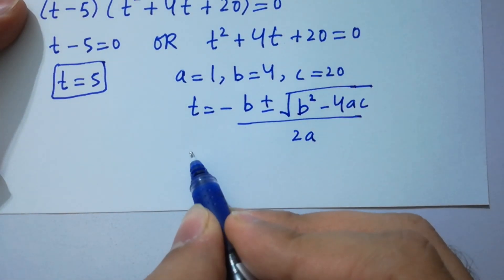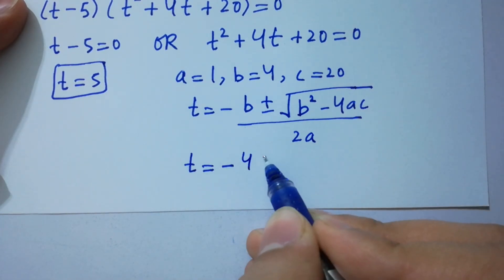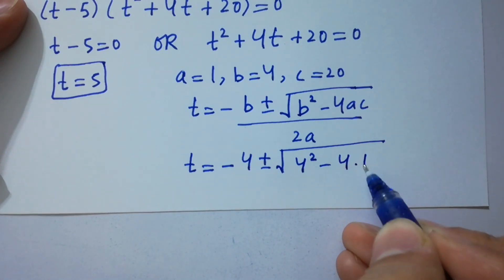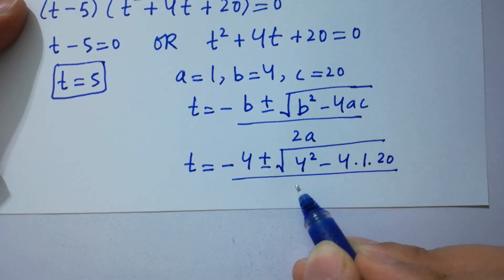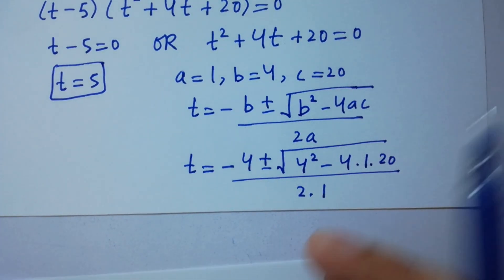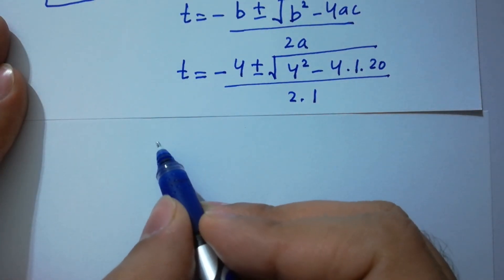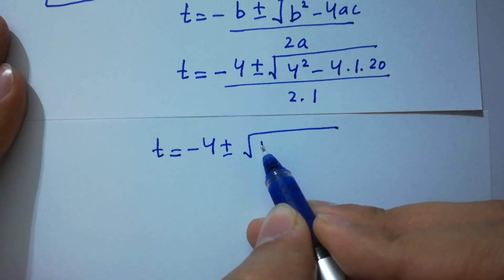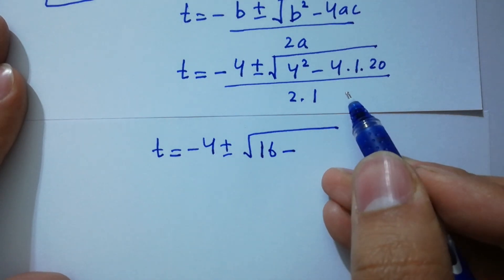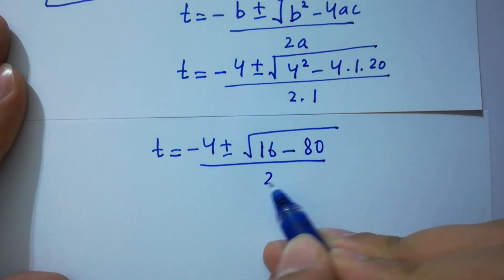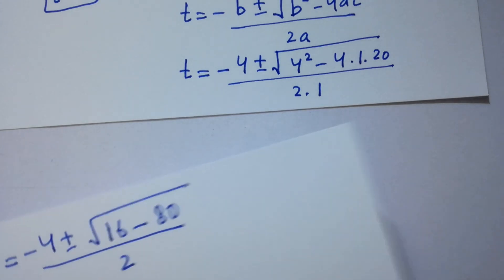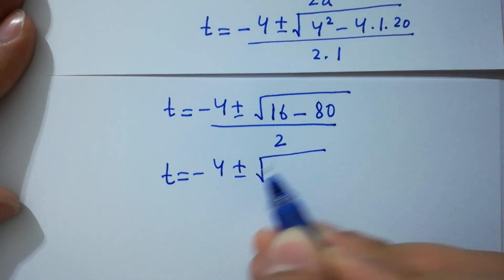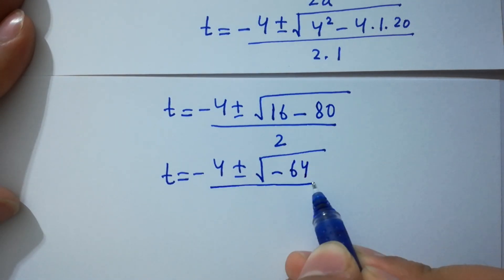Substituting: t equals minus 4 plus or minus square root of 4 squared minus 4 times 1 times 20, over 2 times 1. This gives t equals minus 4 plus or minus square root of 16 minus 80, over 2, which is minus 4 plus or minus square root of minus 64, over 2.